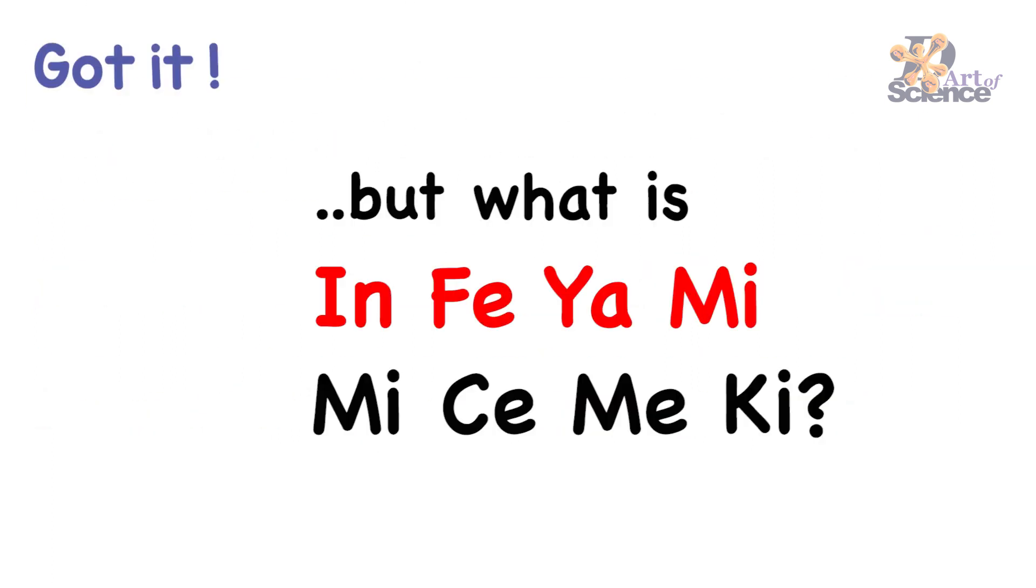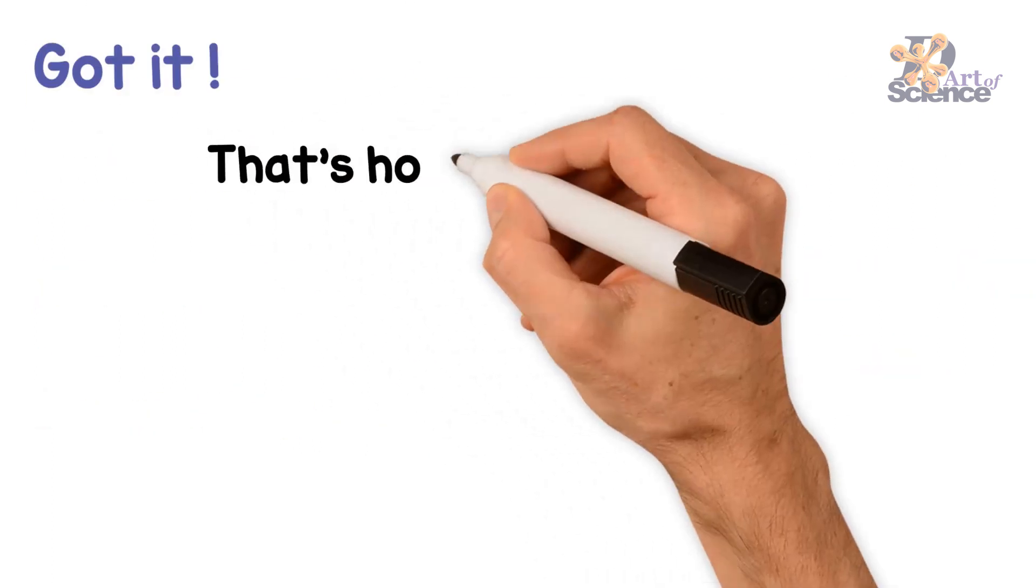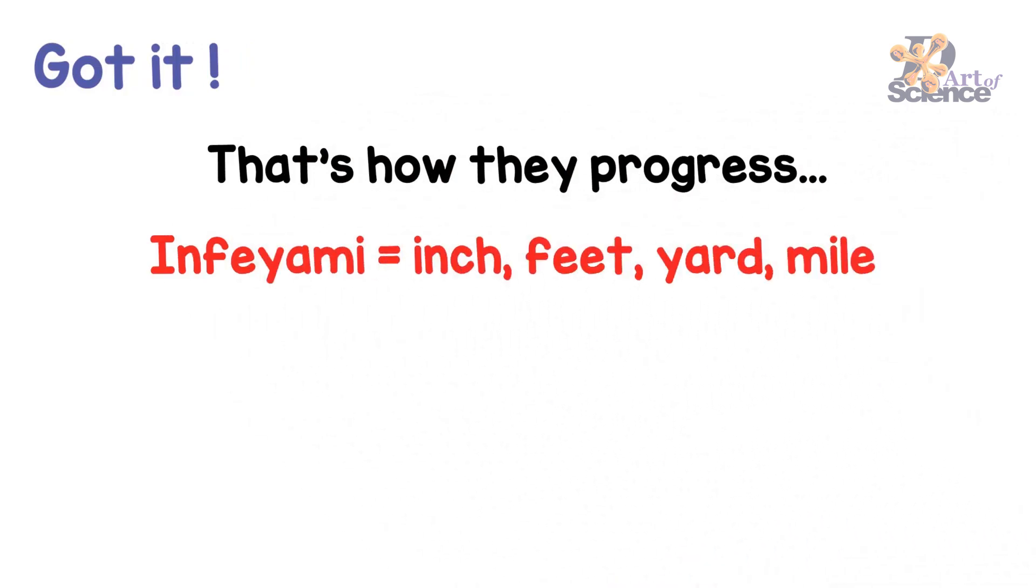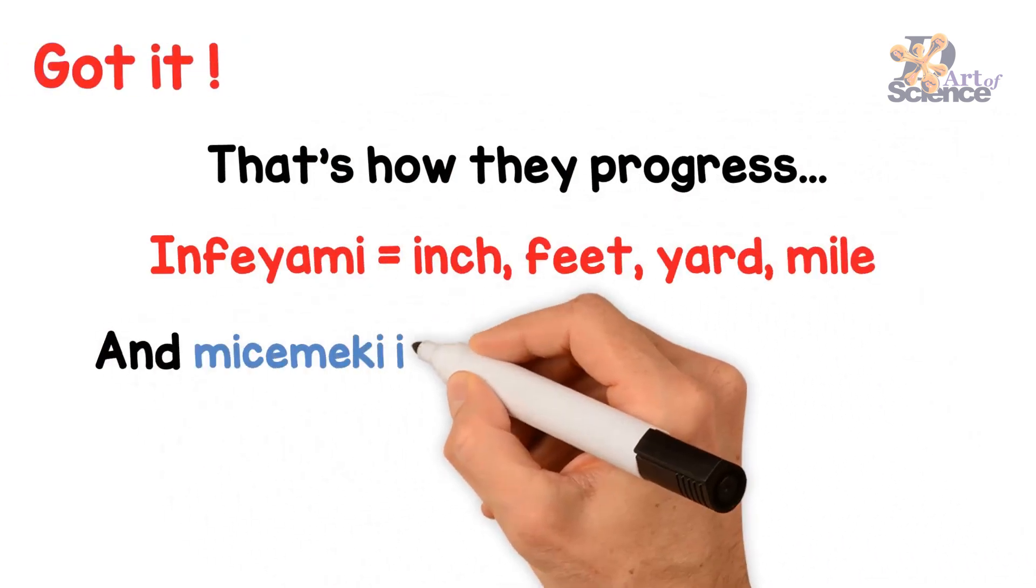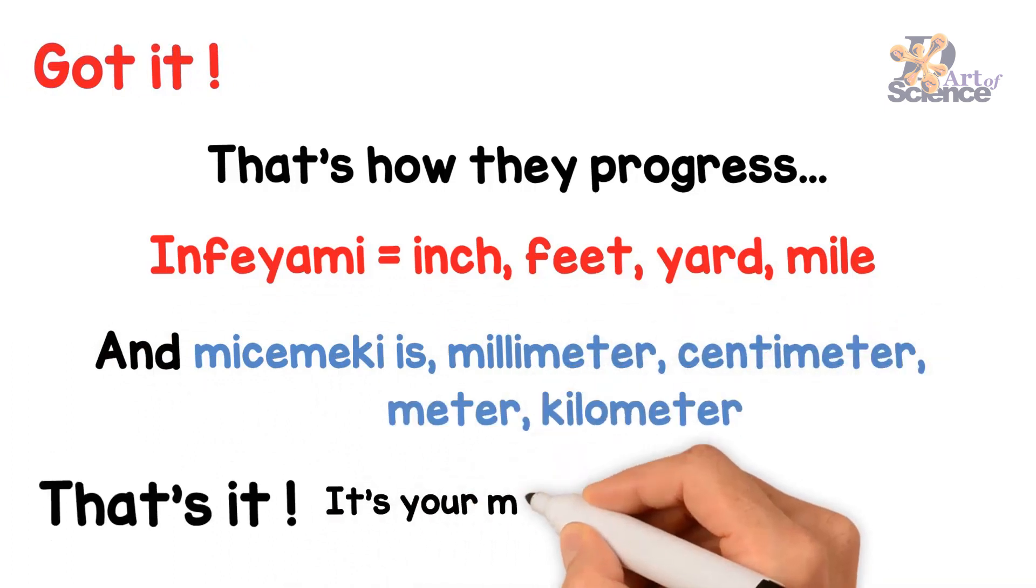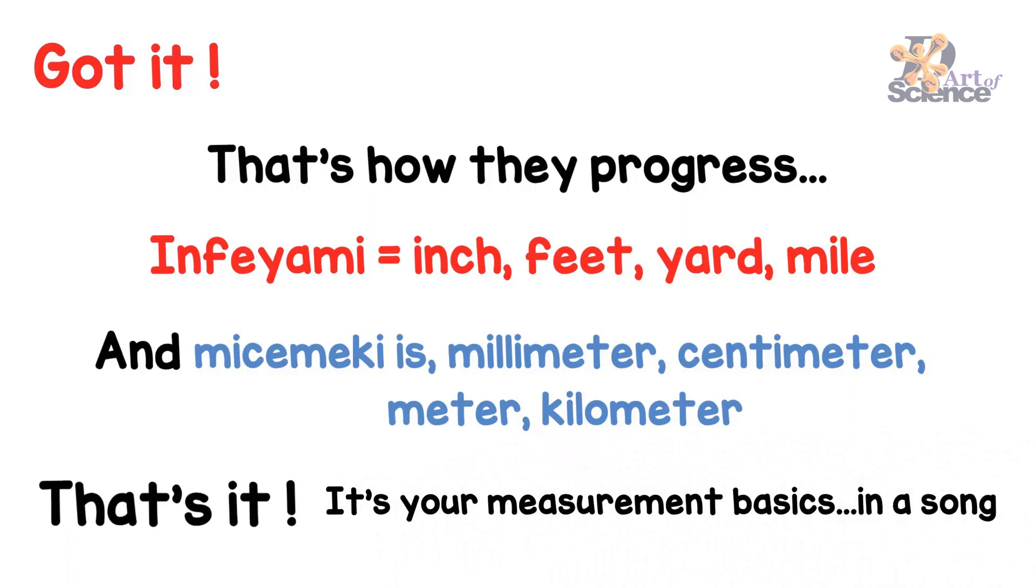But what is infiyami misimeki? That's how they progress. Infiyami equals inch, feet, yard, mile. Got it. And misimeki is millimeter, centimeter, meter, kilometer. That's right. It's your measurement basics in a song.